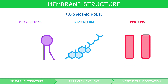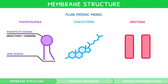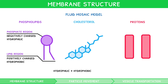But what are phospholipids? The answer is in the name — they contain both a phosphate region and a lipid region. The phosphate region is negatively charged, meaning it is hydrophilic, i.e. attracted to water. The lipid region is positively charged, meaning it is hydrophobic, i.e. not attracted to water. Since the phospholipid has both a hydrophilic and hydrophobic end, it is a class of molecule known as amphipathic.